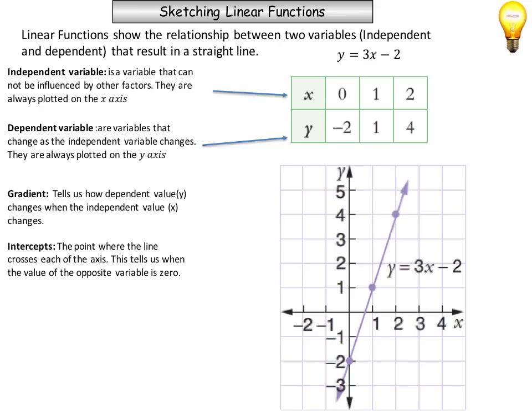If we have a look at where the line crosses the x-axis — which is here — that tells us when the y-value is zero. So at x equals approximately 0.6, the y-value would be zero. If we have a look at where the line crosses the y-axis — which is at this point here — we can see that at negative 2, when y is negative 2, then the x-value would be zero.